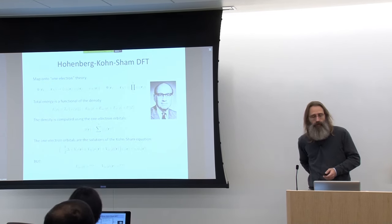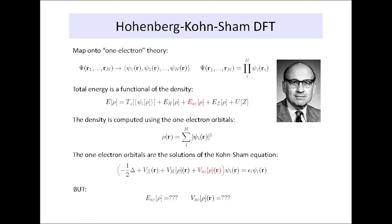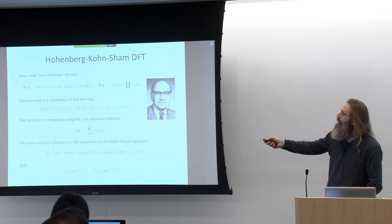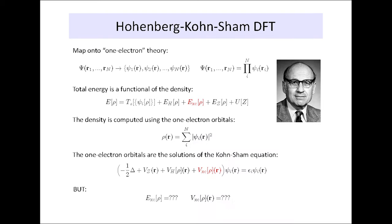Density functional theory is one of these theories. This map from a many-body object onto one-electron functions — in Hohenberg-Kohn-Sham DFT — says we can write our many-body wave function as a product of these one-electron states. In that sense it's always called an uncorrelated wave function, because if these are the probability distributions for the single electrons, and such an object factors out into a simple product, that would be an uncorrelated probability distribution.